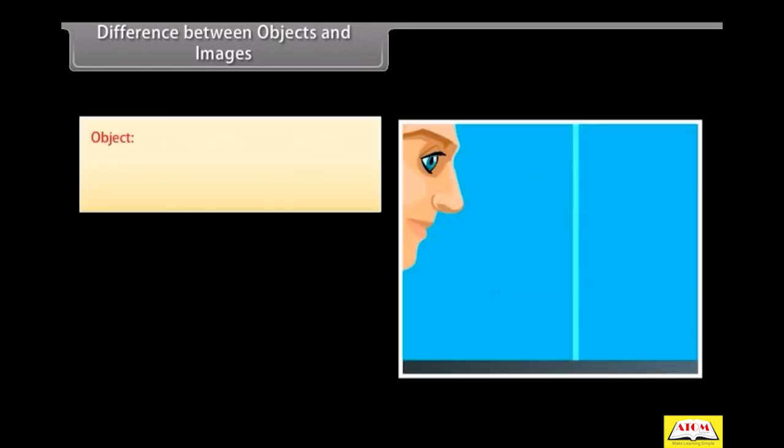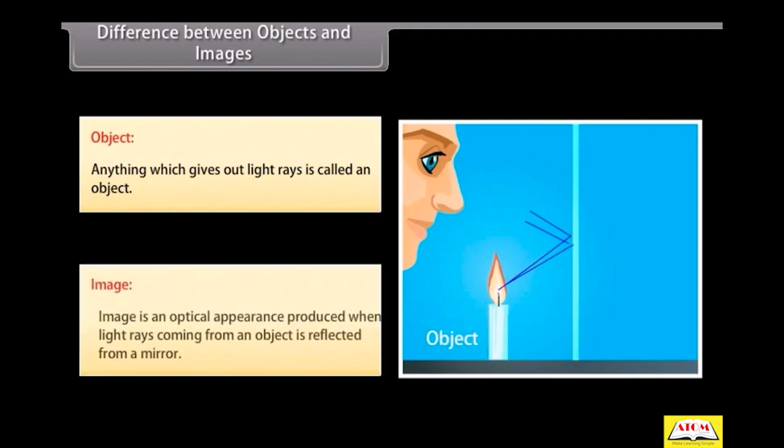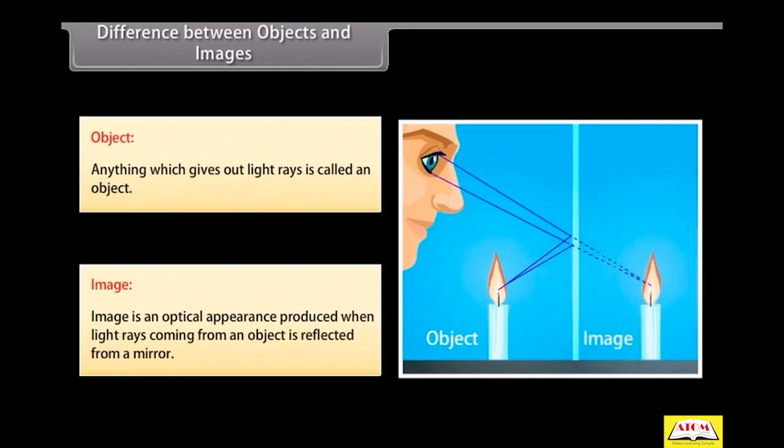Object. Anything which gives out light rays is called an object. Image. Image is an optical appearance produced when light rays coming from an object are reflected from a mirror.